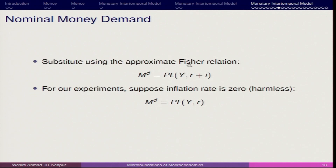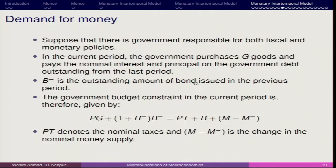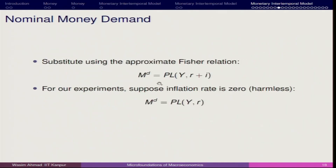Using the Fisher equation — real rate of interest equals nominal rate minus inflation — if we assume the inflation rate is zero, then demand for money is simply P·L(Y, R) where R is positive. So far we have derived the nominal demand for money scenario, and now we will examine the supply side — which factors play an important role.